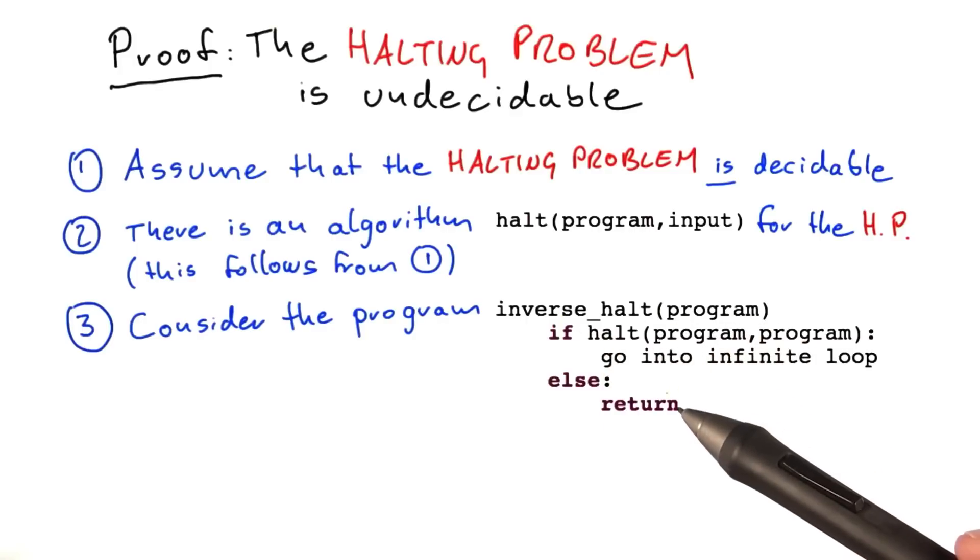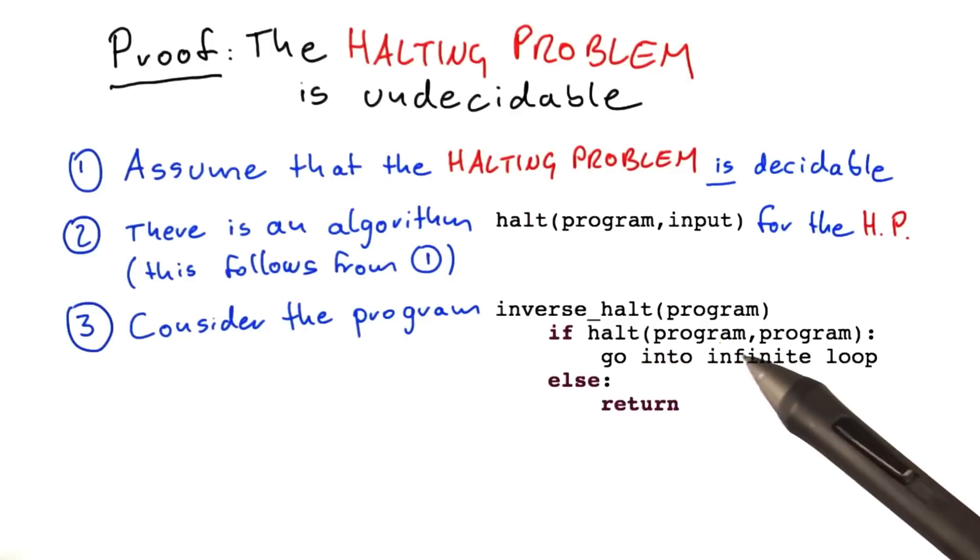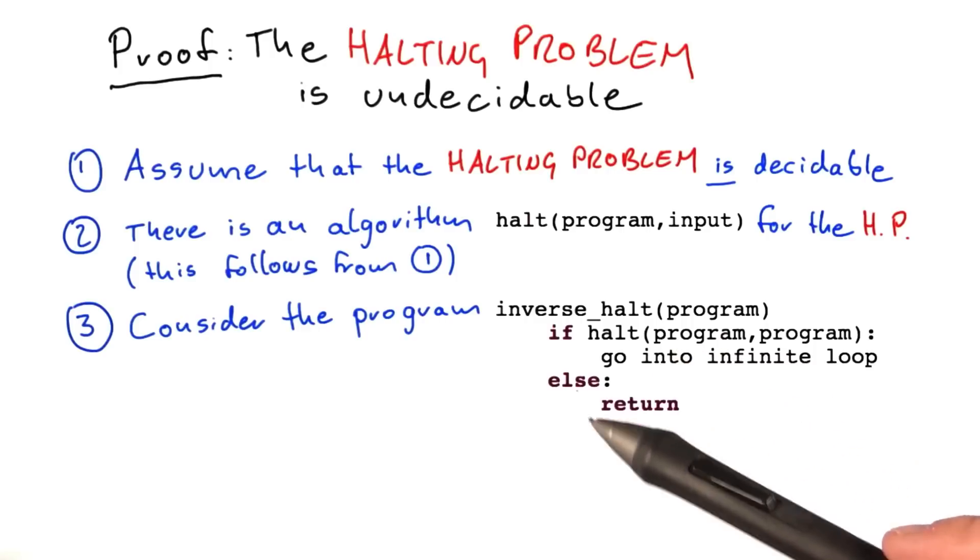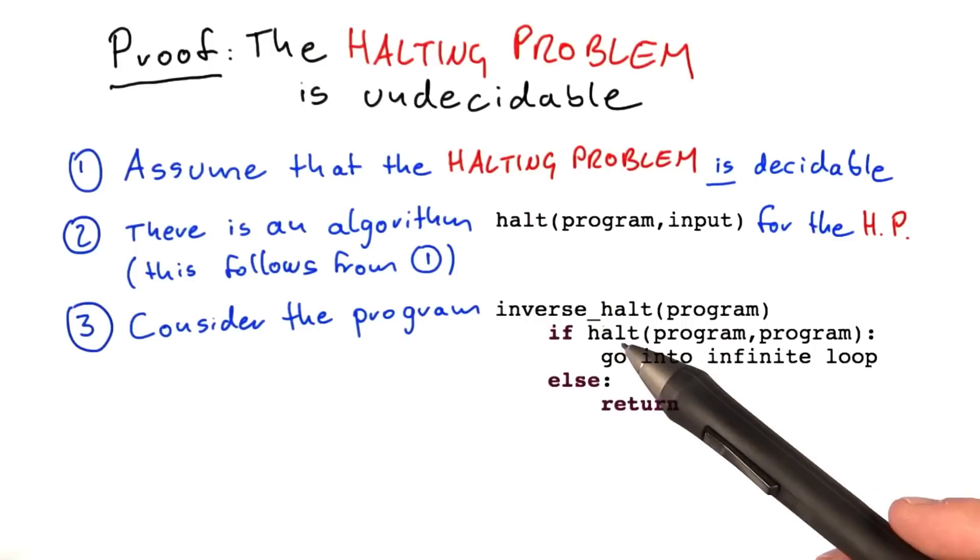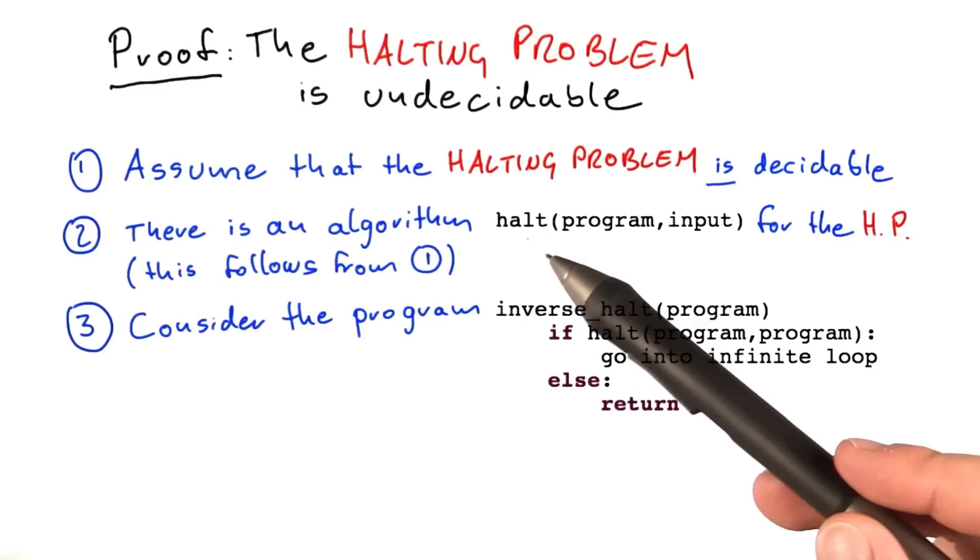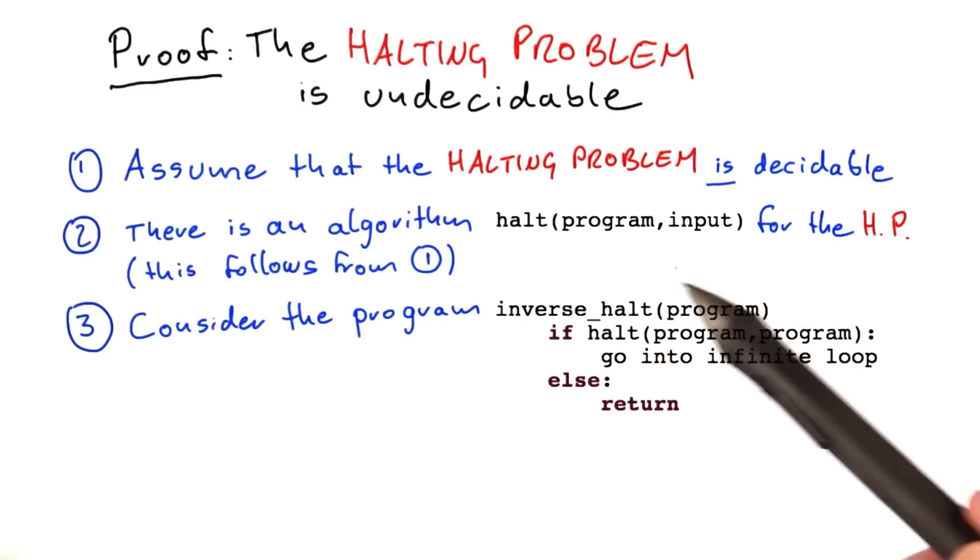If, on the other hand, halt determines that program, given itself as an input, would not stop, so go into an infinite loop, then this whole program here, inverse-halt, would in fact terminate. And we're guaranteed in this case that the overall program inverse-halt will terminate because we know that halt is guaranteed to terminate. After all, it's a valid algorithm that solves the halting problem for any program and any input.